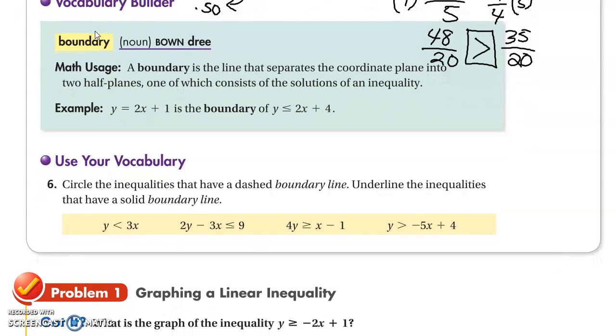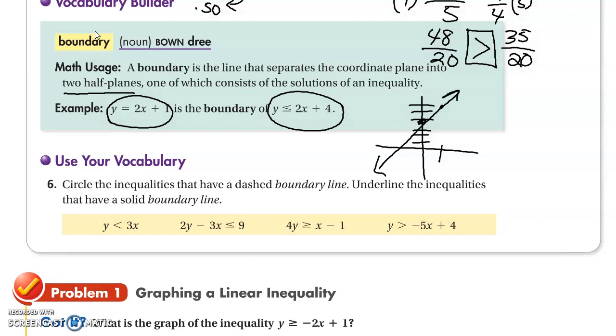Math usage. A boundary is a line that separates a coordinate plane into two half planes, one of which consists of the solutions of the inequality. For example, y equals 2x plus 1 is the boundary of y is less than or equal to 2x plus 4. So 2x plus 4, we're going to start at 4. Put a dot. 2x means two up and one over. So it's less than or equal to, so it's a solid line. And y is less than, so you're going to shade in all of this information.